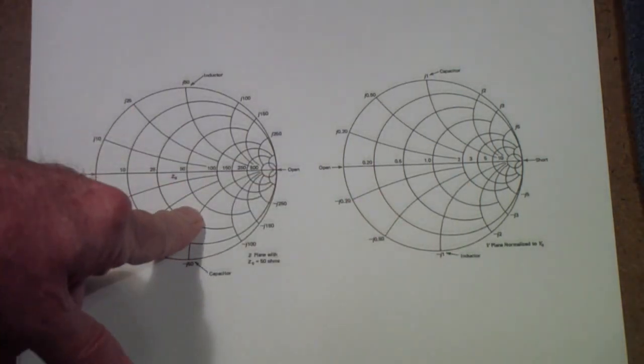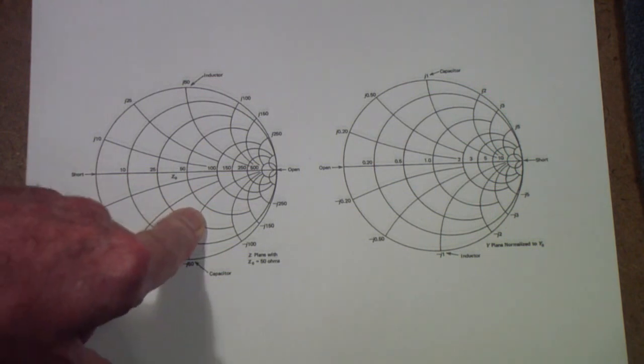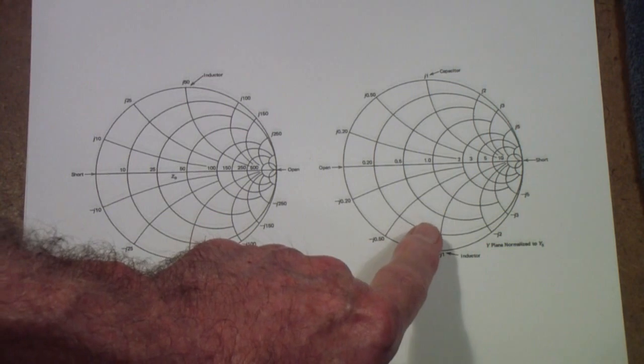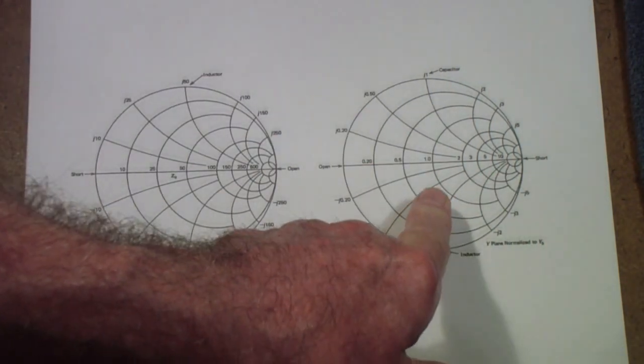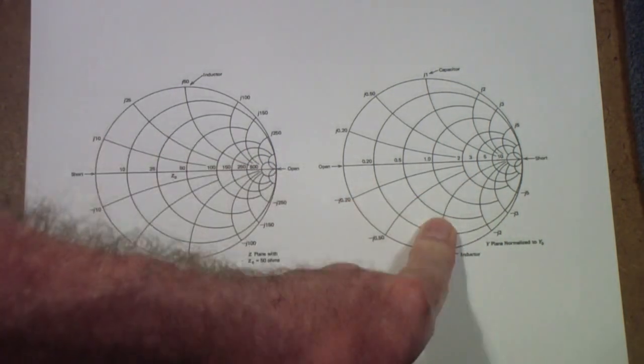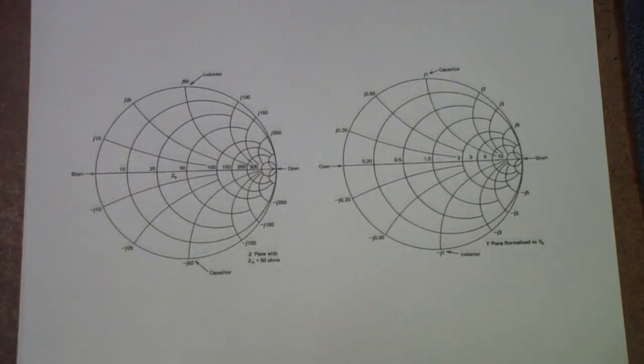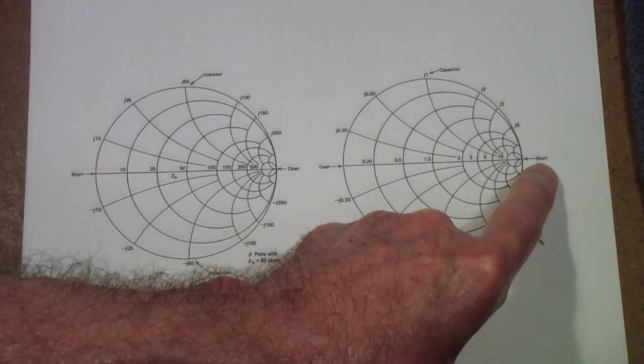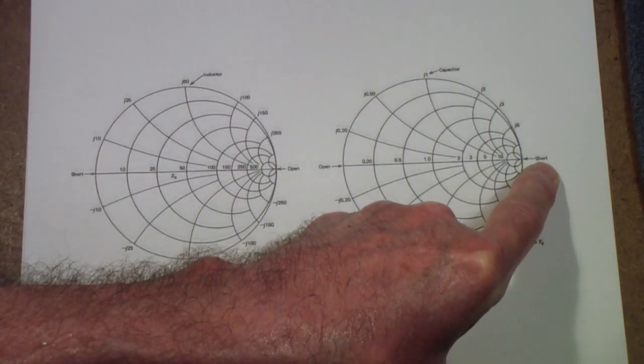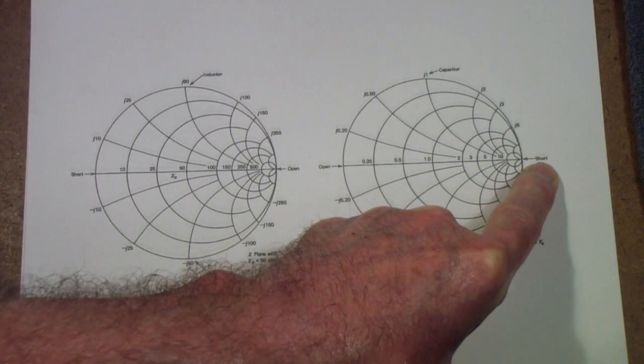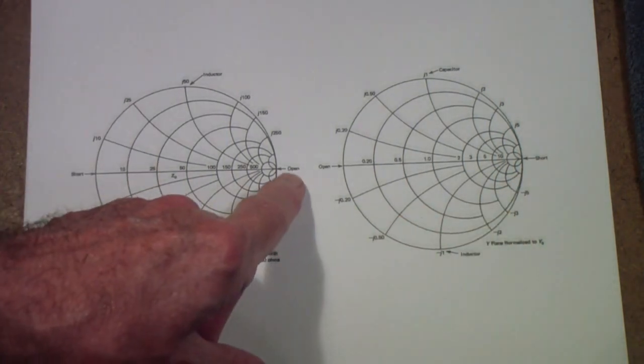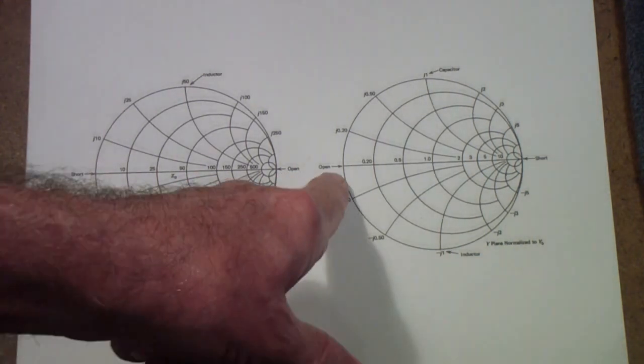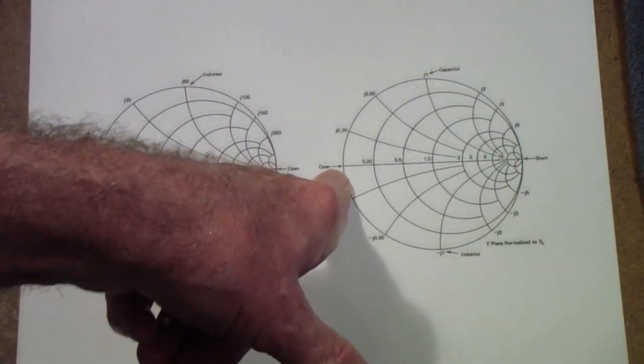Now, most of us learn Ohm's law as E equals IR. If we learned it as I equals EY, then we would draw our Smith charts this way. They are exactly the same thing. Notice, though, that the admittance chart, the short is on the right, whereas on the impedance chart, it's on the left. Similarly, the open is on the right of the impedance chart, and it's on the left of the admittance chart.